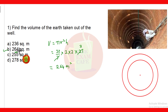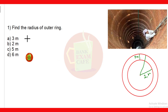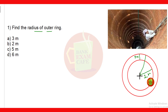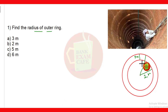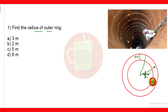Now let us move to the next question: find the radius of the outer ring. It is a very easy question. The inner radius is given as 2 meter and we have to find the outer radius. The width is given as 3 meter. Since the inner radius plus the width gives the outer radius, that is 2 + 3 = 5 meter. So 5 meter will be the radius of the outer ring.